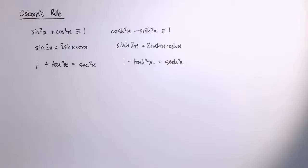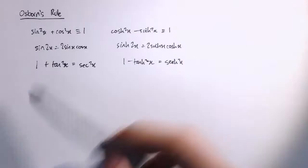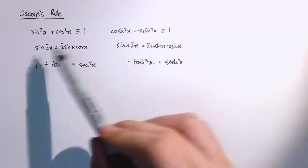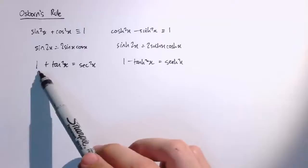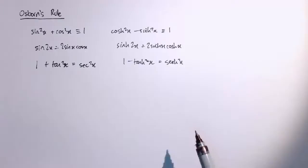We've been talking a lot about trigonometric identities and how they relate to the equivalent hyperbolic identities. There are a lot of similarities: sine squared plus cos squared equals 1 becomes cosh squared minus sinh squared equals 1. Sine 2x equals 2 sine x cos x is pretty much identical. And 1 plus tan squared x equals sech squared x becomes 1 minus tanh squared x equals sech squared x. They're almost identical but sometimes you have to change the sign from a plus to a minus.